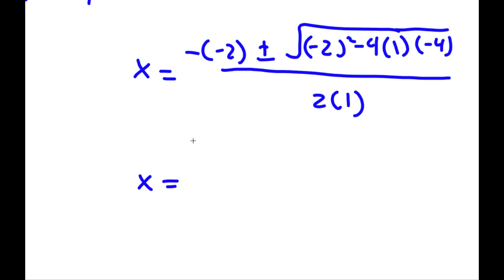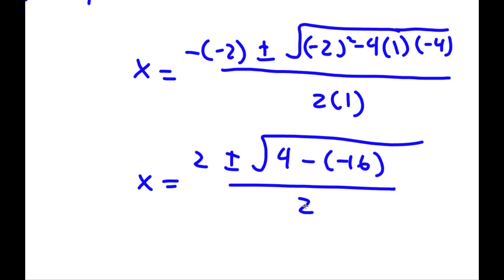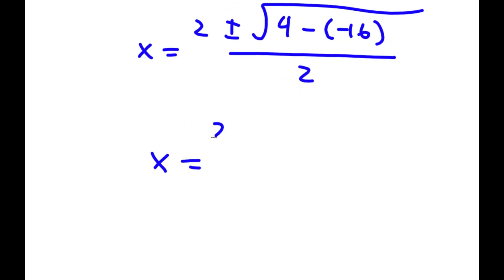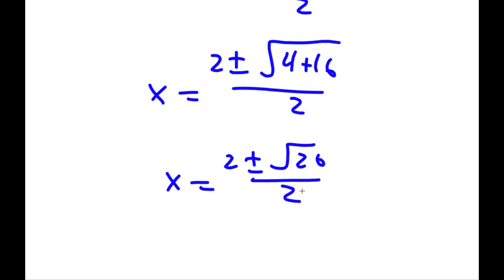So x equals positive 2 plus or minus the square root of: negative 2 squared is positive 4, minus 4 times 1 is 4, times negative 4 is negative 16, all over 2. That gives x equals 2 plus or minus the square root of 4 minus negative 16, which is 4 plus 16, over 2. So x equals 2 plus or minus the square root of 20 over 2.